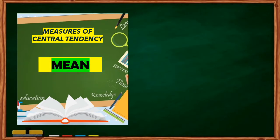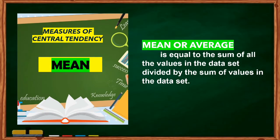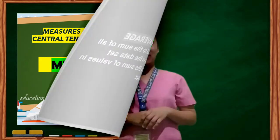Mean. Mean or average is equal to the sum of all the values in the data set divided by the number of values in the data set. In finding the mean of ungrouped data, here are the following examples.